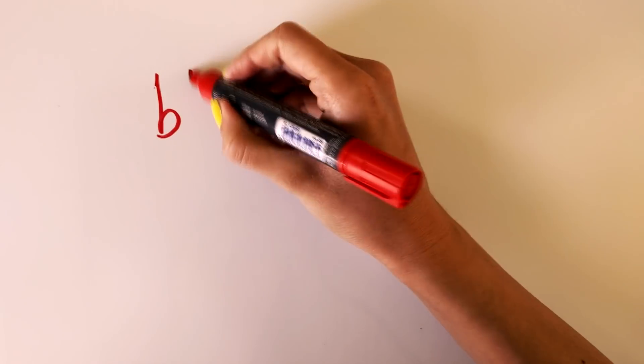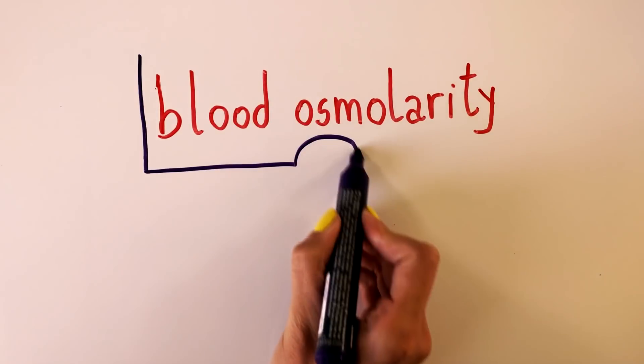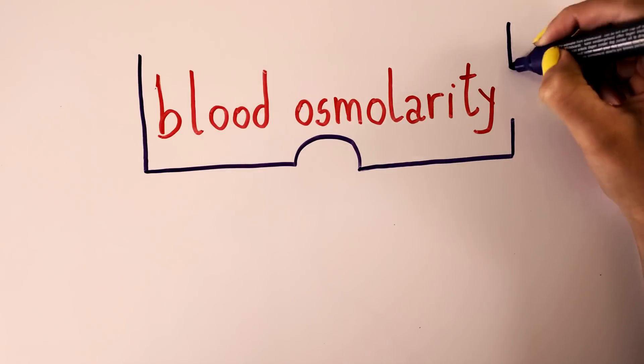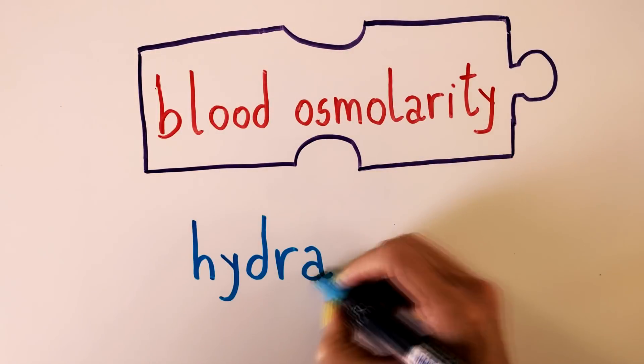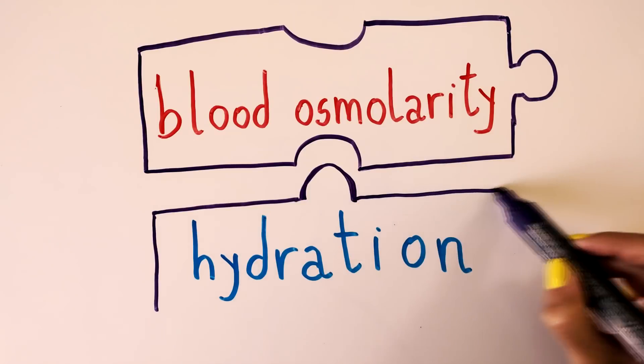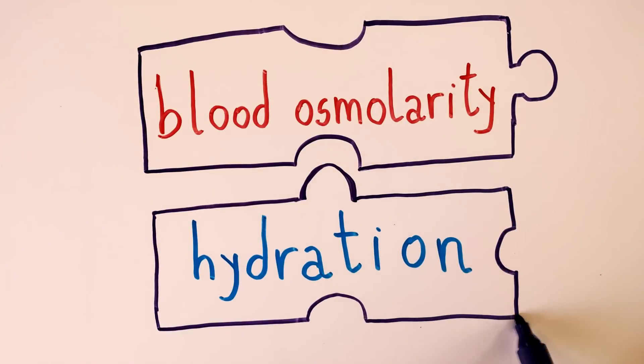An overall concentration of all dissolved substances, such as electrolytes for example, in the blood is known as blood osmolarity. Our thirst response is in close relationship with changes in blood osmolarity as that reflects our state of hydration.